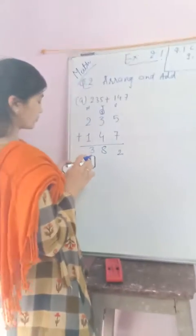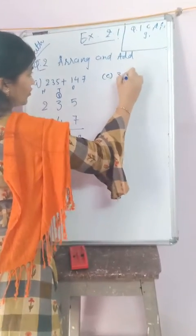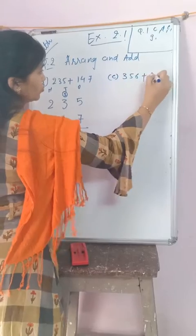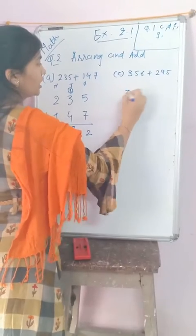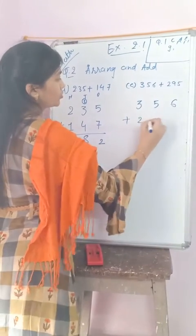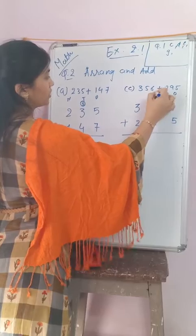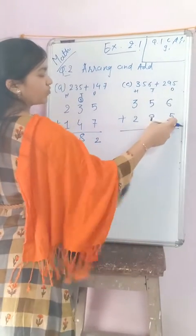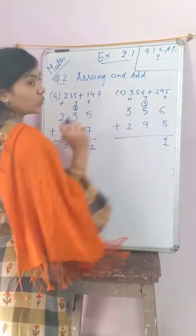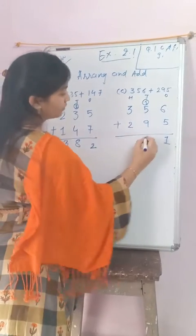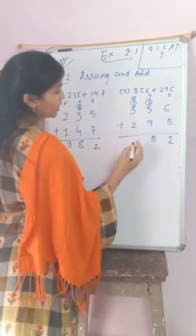Next, I am solving c1: 356 plus 295. Arrange this number vertically — ones, tens, and hundreds. Starting from the ones place: 6 plus 5 equals 11, write 1 and carry 1. Then 5 plus 1 carry equals 6, 6 plus 9 equals 15, write 5 and carry 1. Then 3 plus 1 carry equals 4, 4 plus 2 equals 6. The answer is 651.